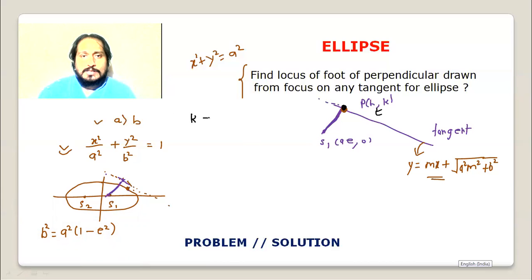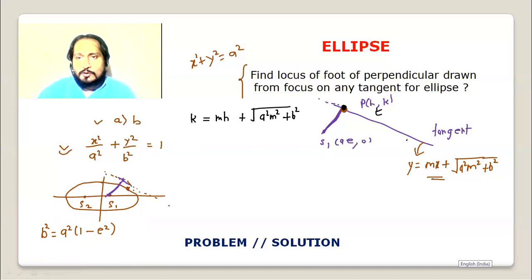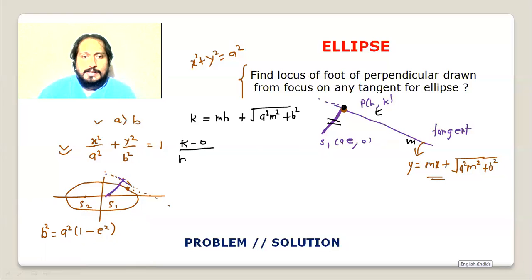From the first relation: k equals mh plus under root of (a squared m squared plus b squared). The second condition is that the line from S1 (ae, 0) to (h, k) is perpendicular to the tangent of slope m, so its slope is minus 1 by m. That gives us: k minus 0 upon h minus ae equals minus 1 by m.